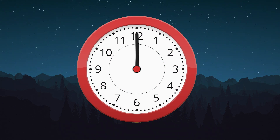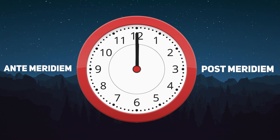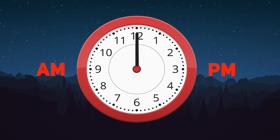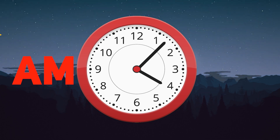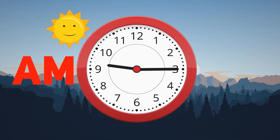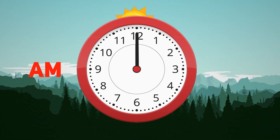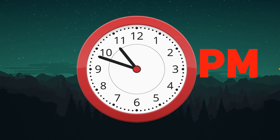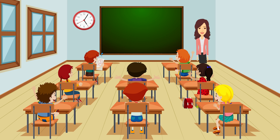These parts are called ante meridiem and post meridiem. Ante meridiem is abbreviated as AM and post meridiem is abbreviated as PM. AM starts from 12 at midnight and goes up to 12 at noon. PM starts from 12 at noon and goes up to 12 at midnight. So once you finish reading a clock, look outside the window and see which part of the day you are at.